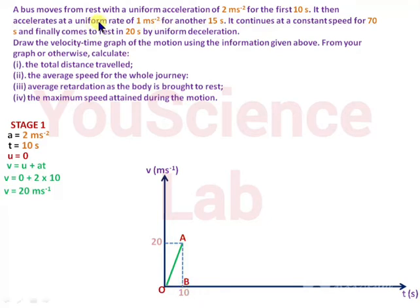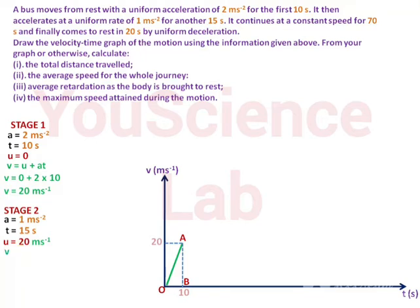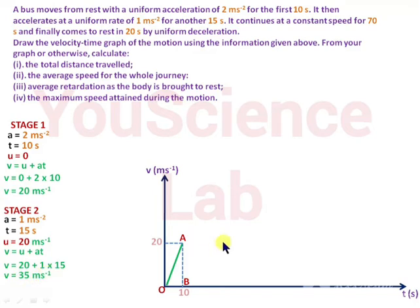In stage 2, the car accelerates at a uniform rate of 1 meter per second squared for another 15 seconds. The initial velocity is the final velocity from stage 1, that is 20 meters per second. Using v = u + at, we get v equal to 20 plus 1 times 15, which equals 35 meters per second. Draw a straight line AC to represent the acceleration from 20 to 35 meters per second in 25 seconds.